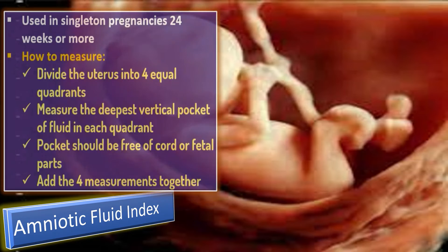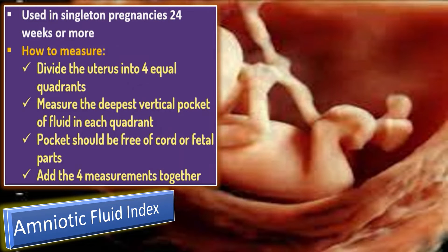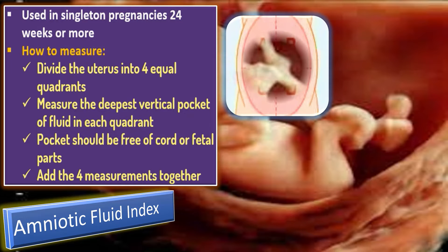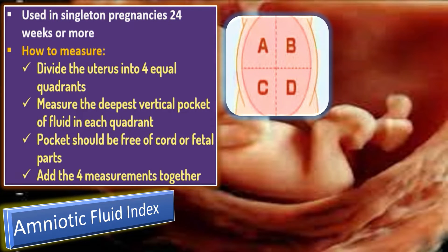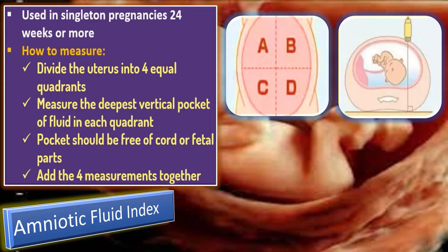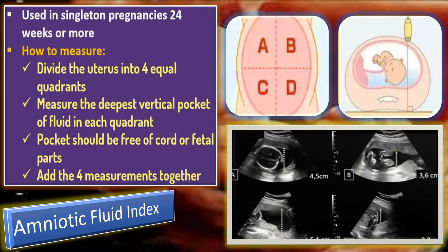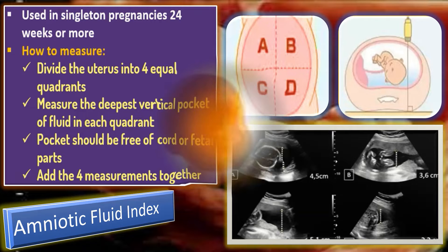Let us discuss amniotic fluid index. This is used in singleton pregnancies at 24 weeks or more. To measure it, first divide the uterus into four equal quadrants and measure the deepest vertical pocket of fluid in each quadrant. The pocket should be free of cord or fetal parts.